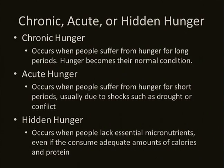When we talk about hunger, I want to mention that of the three types of hunger — chronic, acute, and hidden hunger — chronic hunger is when people suffer from hunger for long periods of time and hunger becomes their normal condition. Acute hunger is when people suffer from hunger for a short period of time, usually due to shocks such as drought or conflict. And hidden hunger occurs when people are lacking essential micronutrients, even if they're consuming an adequate number of calories and proteins.